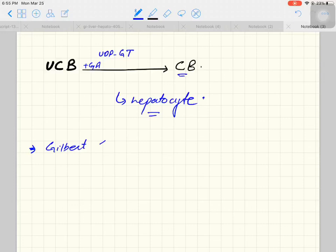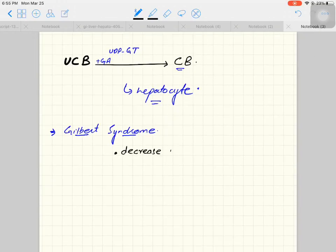Gilbert syndrome is an autosomal genetic disorder which leads to deficiency of UDP glucuronyl transferase. Decreased UDP glucuronyl transferase enzyme to 10-35% of normal, so it is not a severe deficiency.